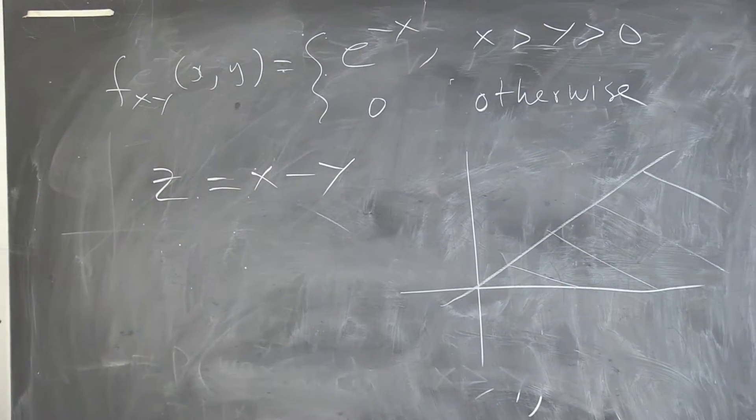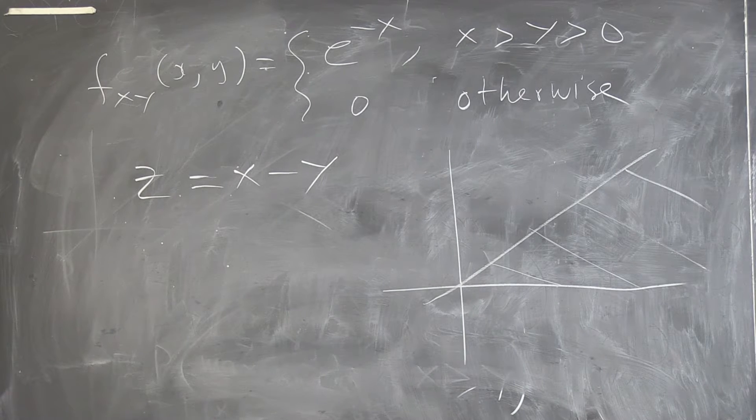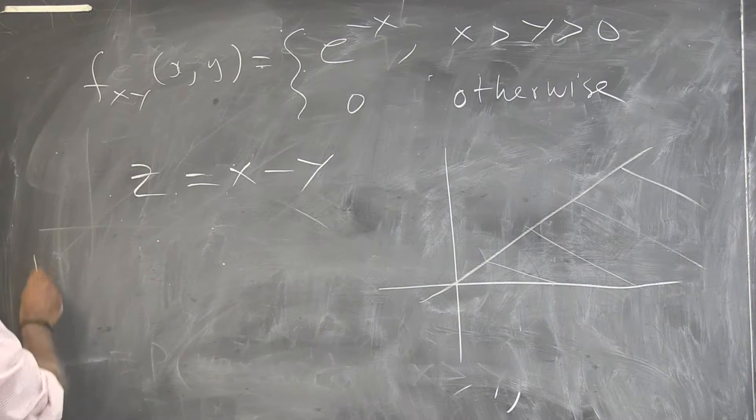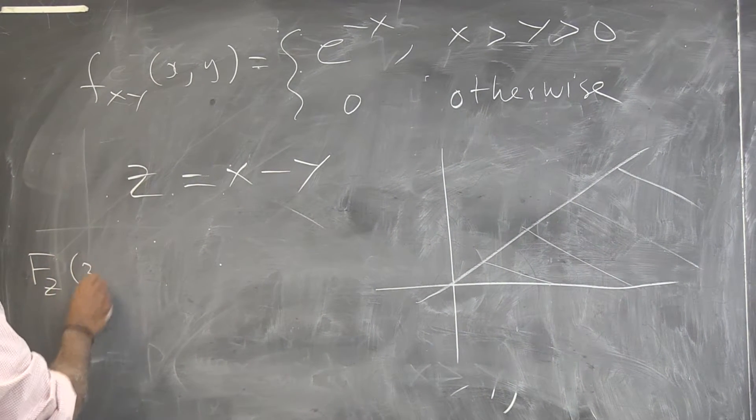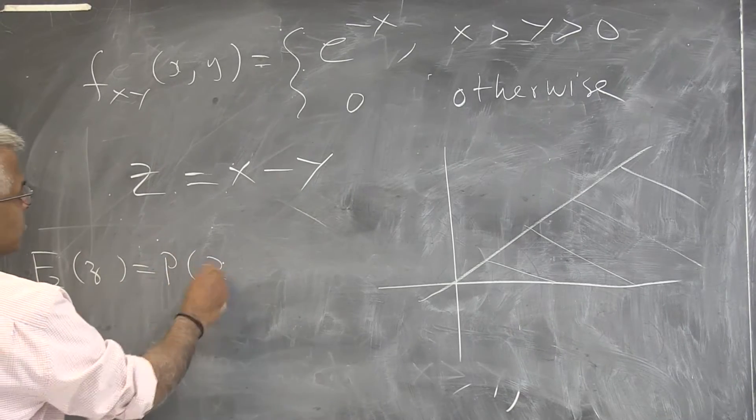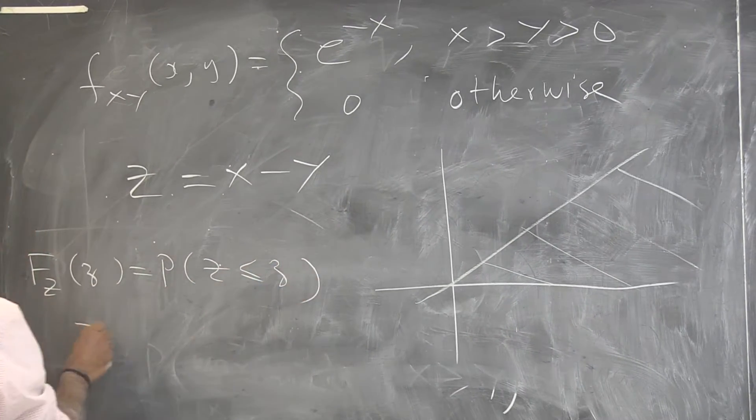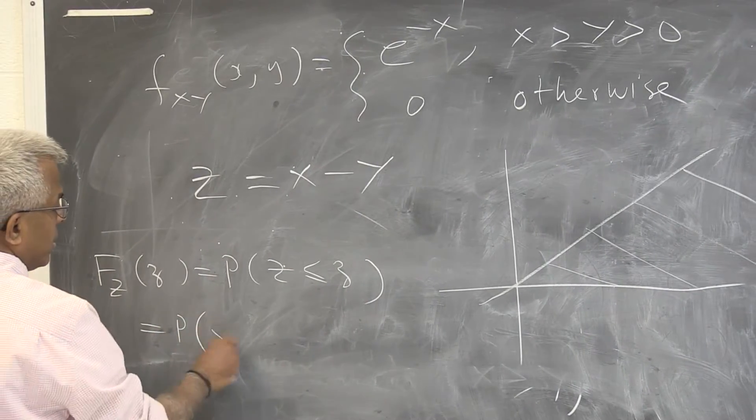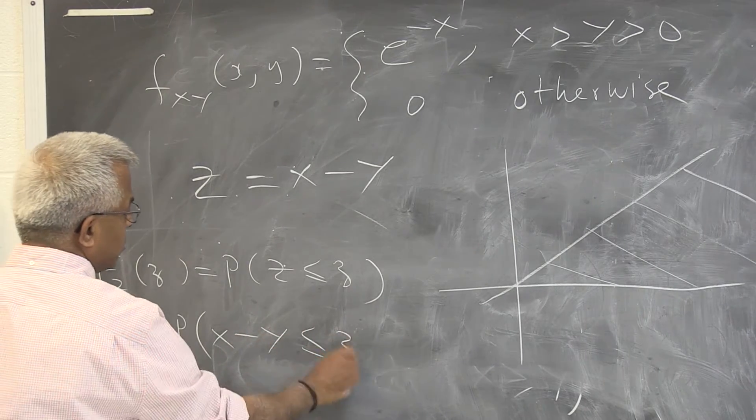And we want the density function of z, which is the difference. If z is the probability of z less than or equal to z, z is given to be x minus y less than or equal to z.